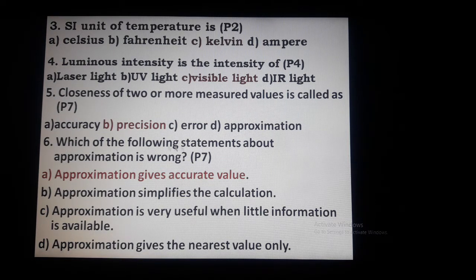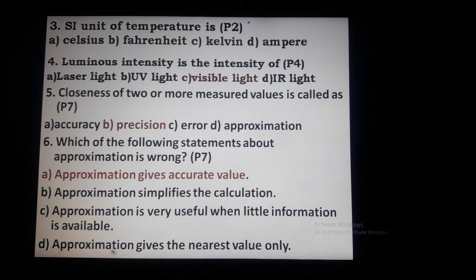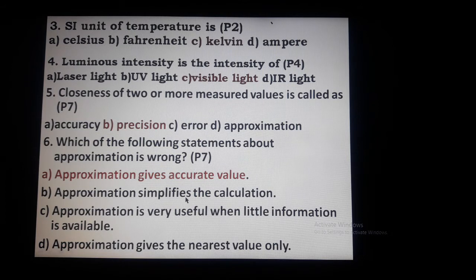Question 6: which of the following statements about approximation is wrong? There are 4 statements. First: approximation gives the nearest value only — correct. Second: approximation is very useful when little information is available — correct. Third: approximation simplifies the calculation — correct. Fourth: approximation gives an accurate value — this is wrong. So this statement is wrong, and that is the answer.